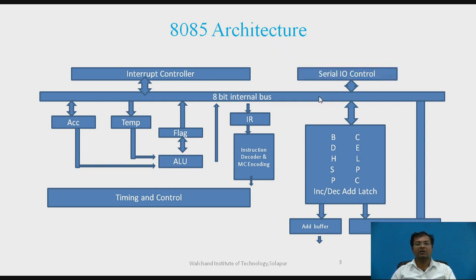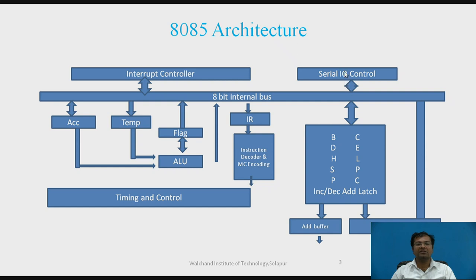There is one more control circuit which is Serial I/O. It has two pins: Serial IN data and Serial OUT data. This is mainly designed for communication between the microprocessor and an external device. The communication takes place in a serial way, meaning at a particular time, a single bit is transferred.